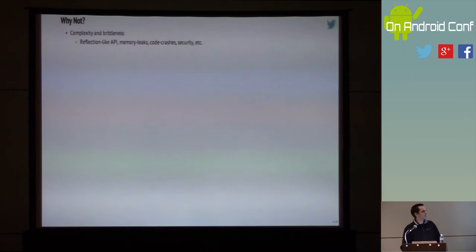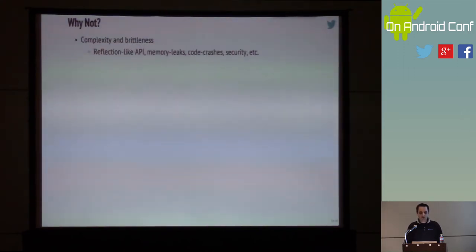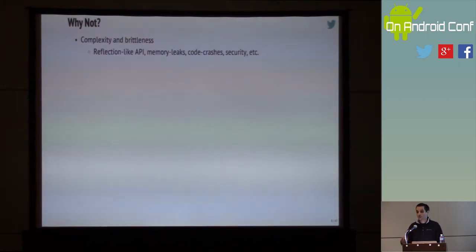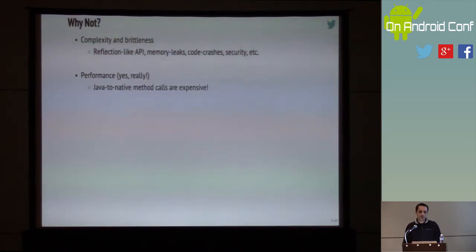So why not go native? Before I tell you how, I want to tell you why you shouldn't. First, complexity and brittleness. When implementing the Java-to-native bridge, you're dealing with reflection-based APIs, memory management — which leads to memory leaks, memory corruption, and crashes — and security vulnerabilities like buffer overruns.